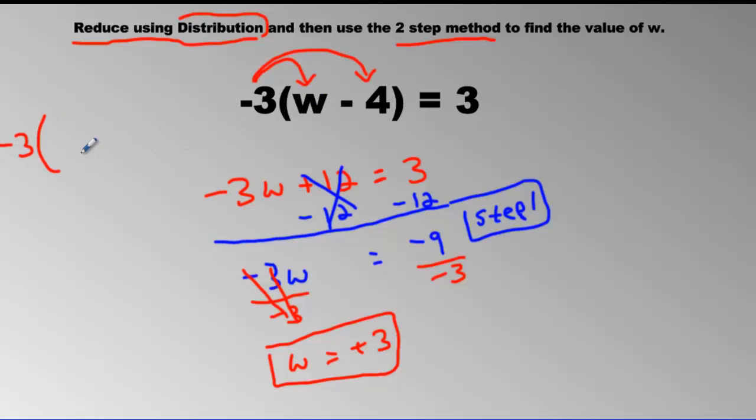W is positive 3. We can substitute it in here and say negative 3, instead of W, we'll put a positive 3 minus 4 equals 3. I just substituted there. Now, positive 3 take away 4 is negative 1. BEDMAS, do the brackets first. Equals 3. And we know that negative 3 times negative 1 is a positive 3 equals 3. And these are true statements, which means we did the question correct.